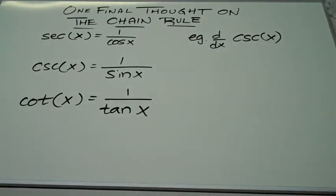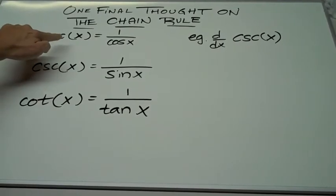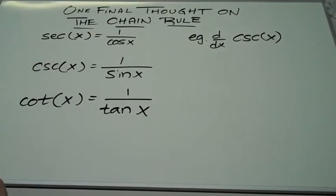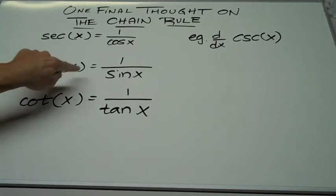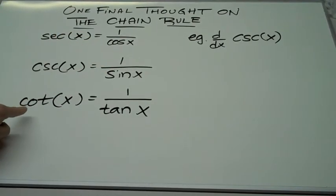I have one final thought here on the chain rule. One thing you have to remember is your trig identities. Remember that secant x is really 1 over cosine x, and cosecant x is really 1 over sine x, and cotangent x is really 1 over tangent x. Well, how does that work with the chain rule?